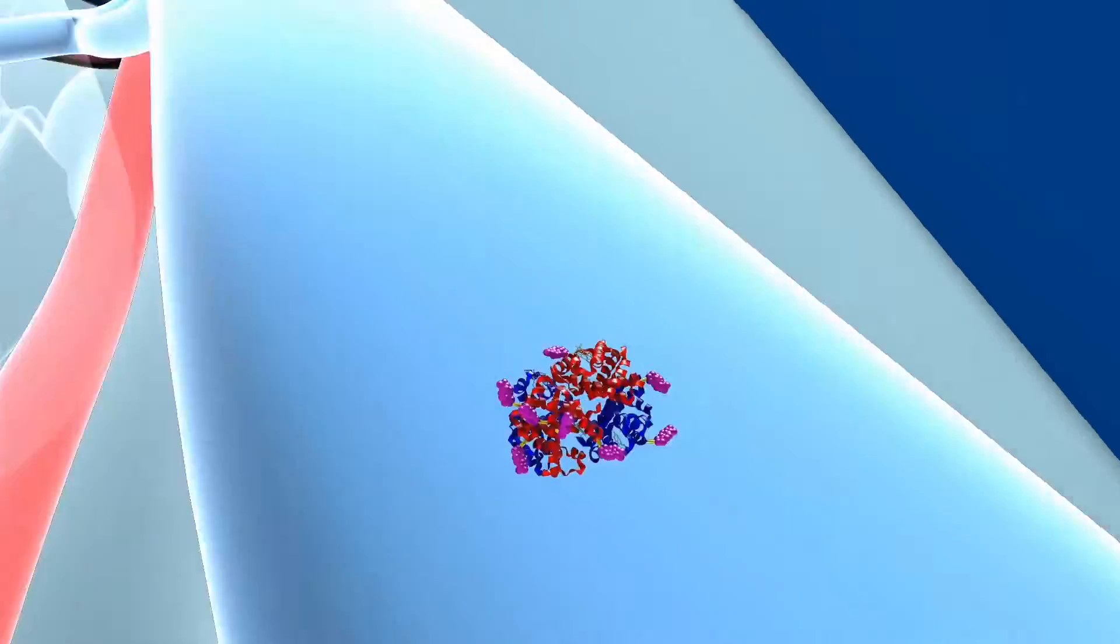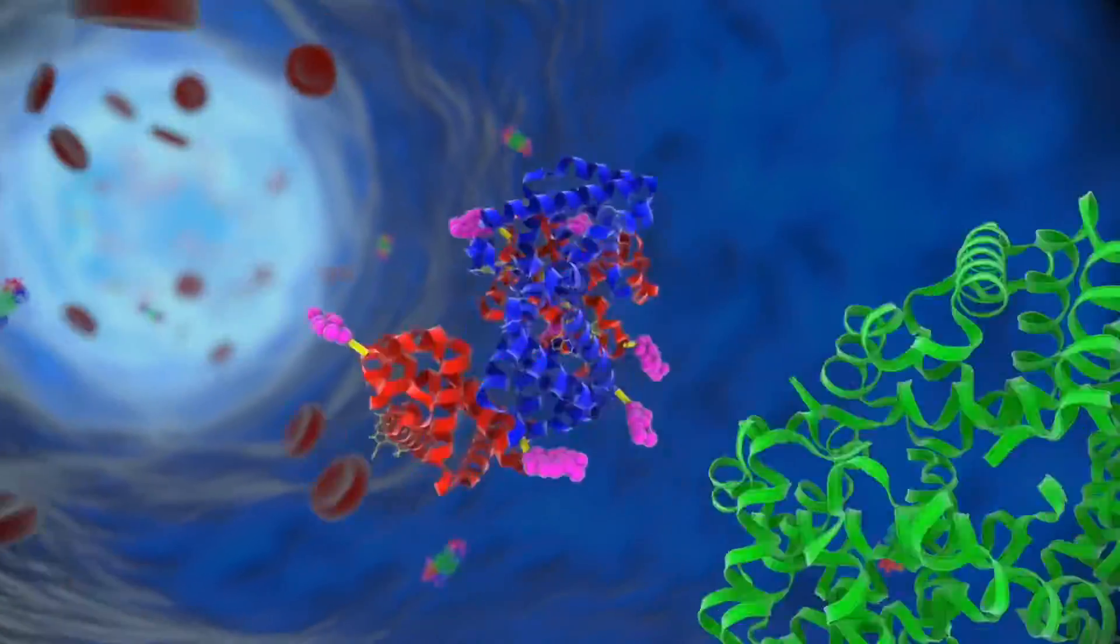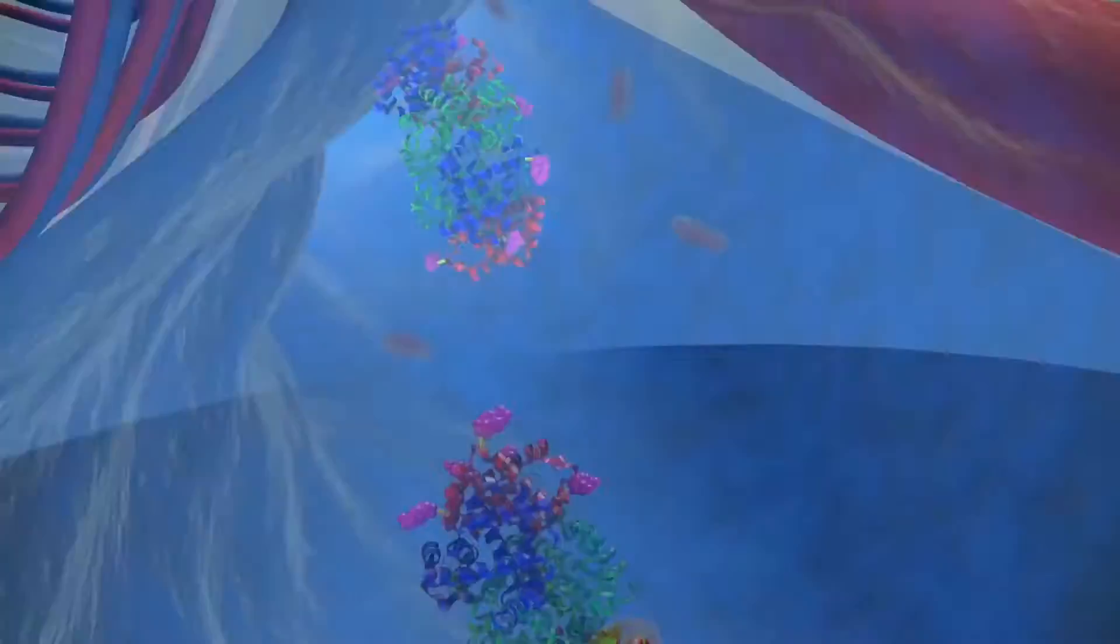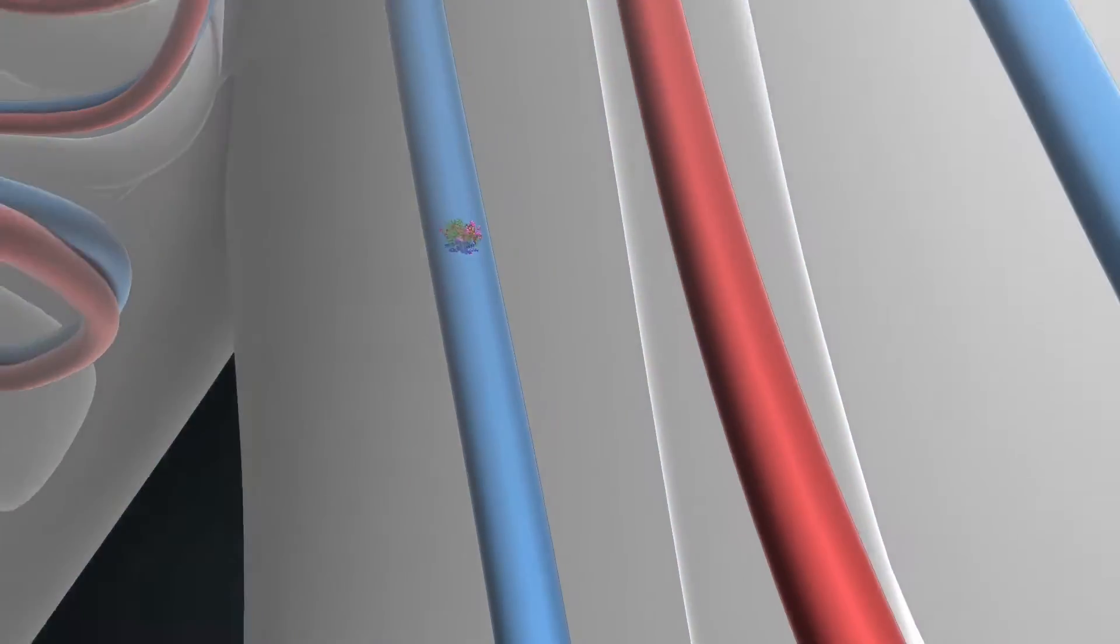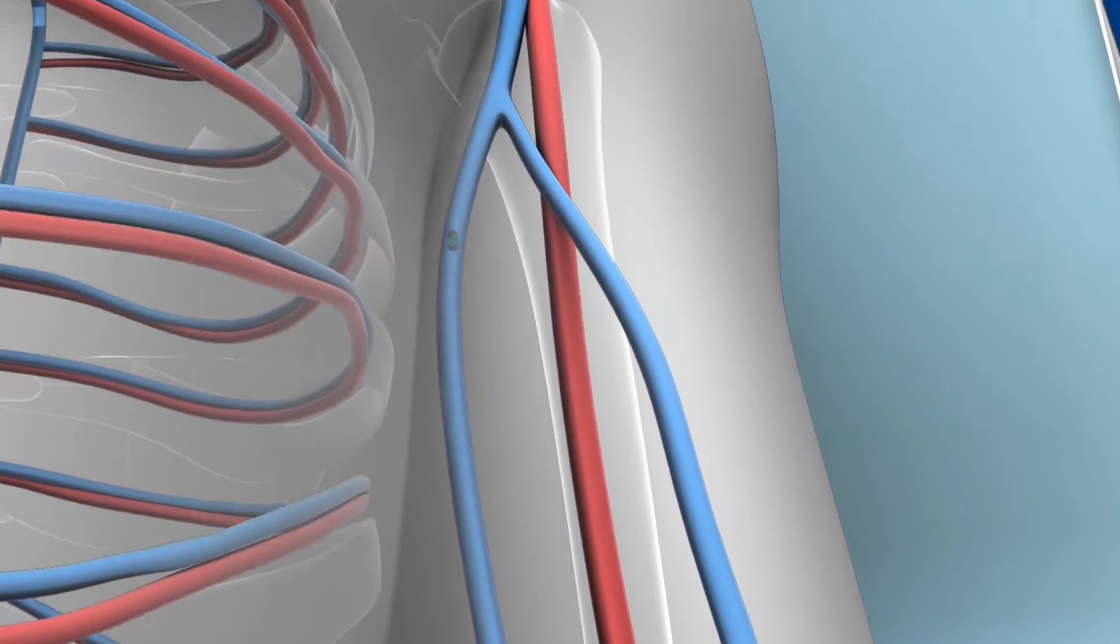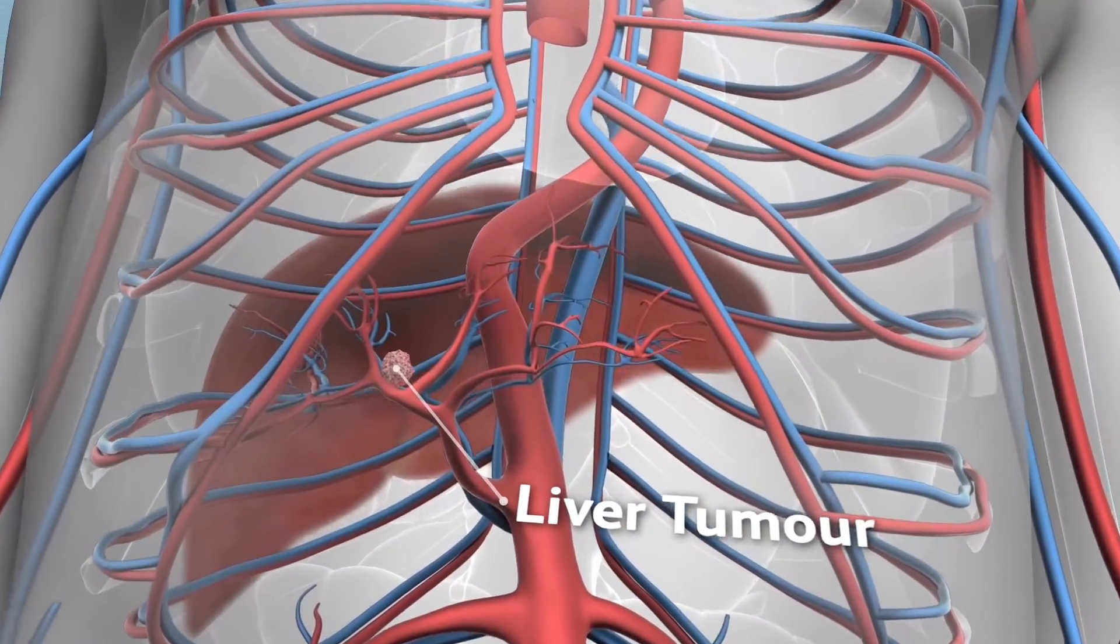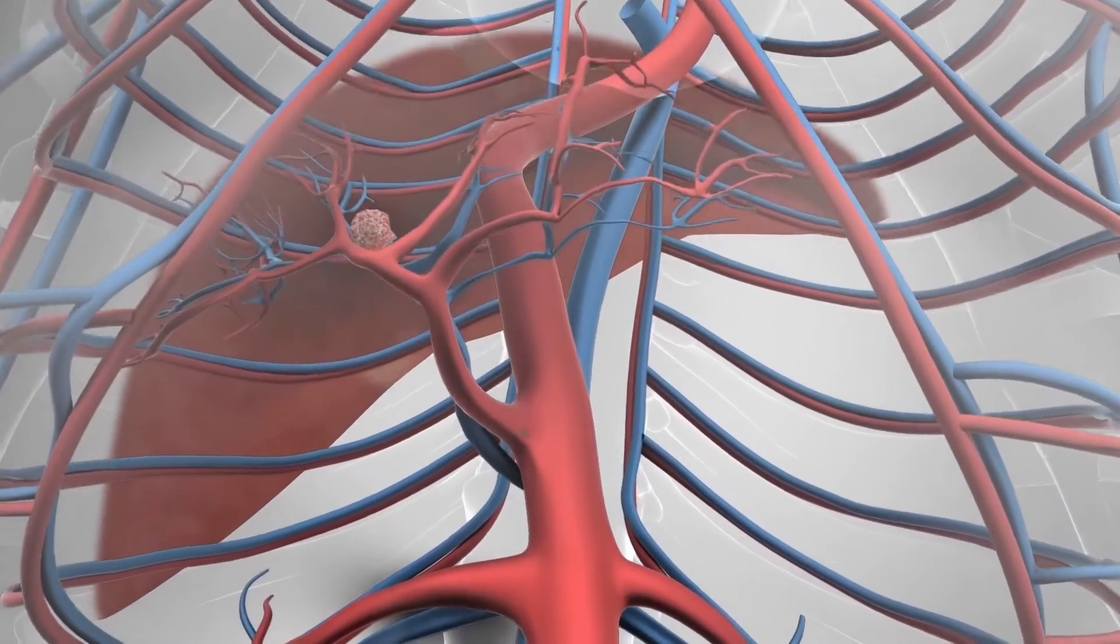Immediately upon intravenous infusion, TBI-302 rapidly binds to a carrier protein in plasma called haptoglobin. By way of the natural clearance pathway for hemoglobin, the protein drug complex is carried through the bloodstream to the liver, avoiding drug exposure to other organs and tissues.